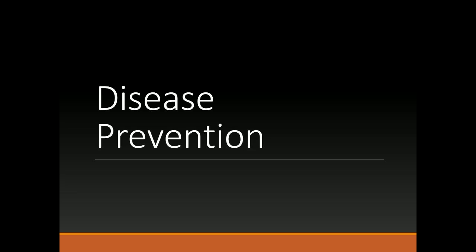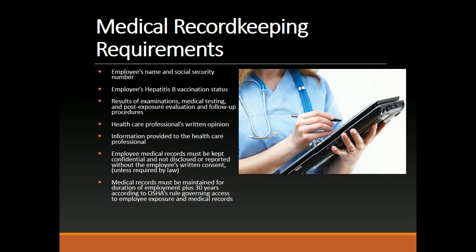Disease Prevention — Medical Record Keeping Requirements. Records must include: employee's name and Social Security Number, employee's Hepatitis B vaccination status, results of examinations, medical testing, and post-exposure evaluation and follow-up procedures, healthcare professional's written opinion, and information provided to the healthcare professional. Employee medical records must be kept confidential and not disclosed or reported without the employee's written consent, unless required by law. Medical records must be maintained for the duration of employment plus 30 years, according to OSHA's rule governing access to employee exposure and medical records.